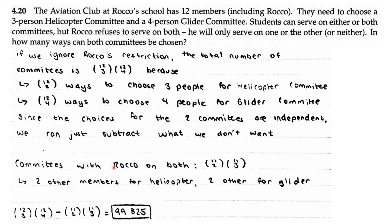We subtract the cases when Rocco is on both committees. Committees with Rocco on both is C(11,2) times C(11,3), because there are two other members needed for the helicopter and three other members needed for the glider.